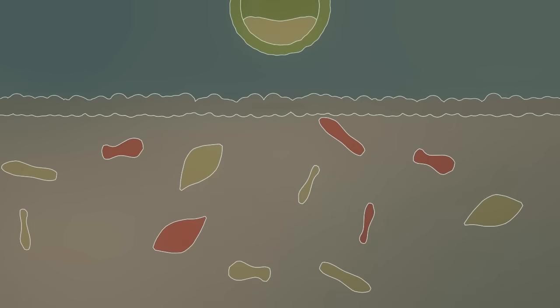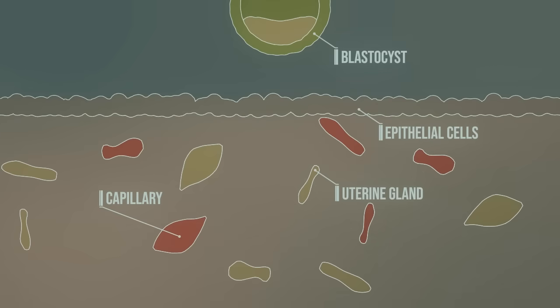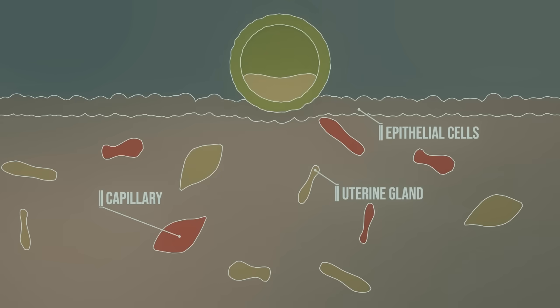Let's take a closer look at this. The endometrium has a protective epithelium and capillaries filled with blood, as well as mucus-producing glands. The trophoblast cells fuse with the endometrium.